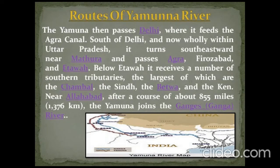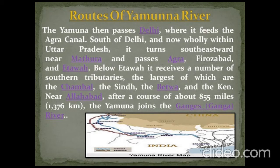The Yamuna river then passes through Delhi where it feeds the Agra canal. South of Delhi and wholly within Uttar Pradesh, it turns southeastward near Mathura and passes Agra, Firozabad, and Etawah. Below Etawah, it receives a number of southern tributaries, the largest of which are the Chambal, the Sindh, the Betwa, and the Ken. Near Allahabad, after a course of about 825 miles, the Yamuna joins the Ganga river.